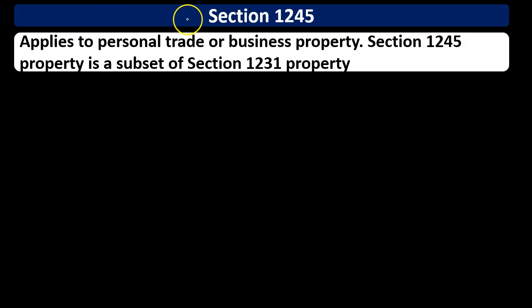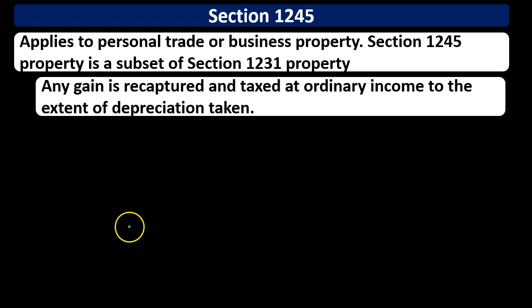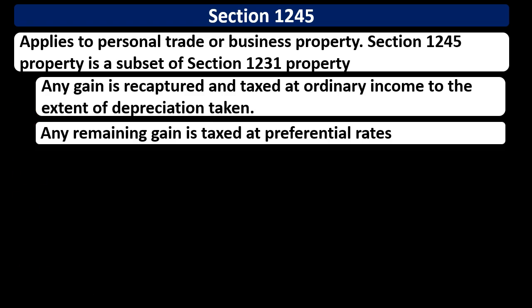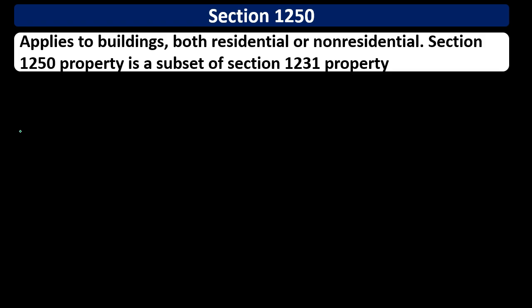Section 1245 property is a subsection of Section 1231 and applies to personal trade or business property. Any gain is recaptured and taxed at ordinary income rates to the extent of depreciation taken. Any remaining gain beyond that is taxed at the preferential capital gains rates, which are typically lower than ordinary income rates.